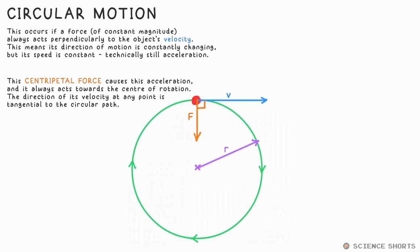This centripetal acceleration is equal to v squared over r, where r is the radius of the circle. As F equals ma, the centripetal force is equal to mv squared over r.